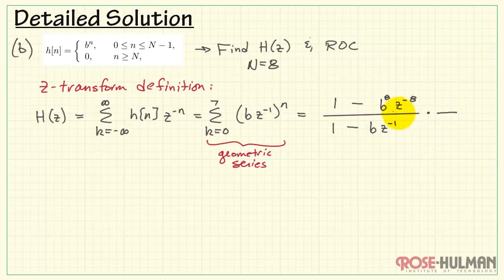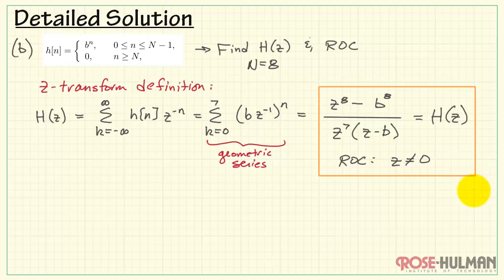The problem statement asked us to get the H of Z into the form of Z instead of Z inverse. So I'm going to multiply top and bottom by Z to the 8th. We'll cancel the Z inverse to the 8th. Here we have Z to the 8th. And this will give us B times Z to the 7th. Let me factor out Z to the 7th. And this looks like a good form. This would be H of Z. As far as the region of convergence is concerned, everything is fine provided we do not allow Z to be equal to zero. So we'll write that as Z not equal to zero. This is the result for part B.